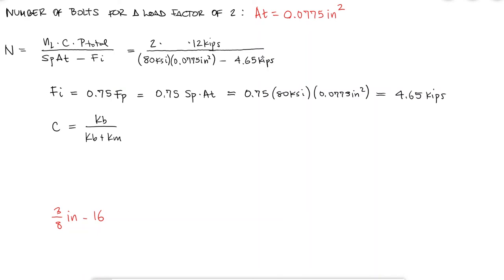What this means is that the problem of finding the number of bolts comes down to calculating the stiffness constant of the joint C, which means we need to calculate the bolt stiffness and the member stiffness constants, KB and KM.